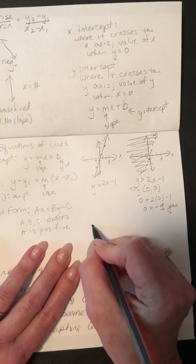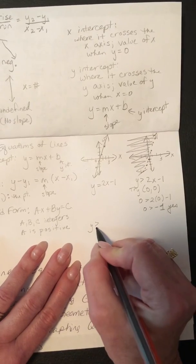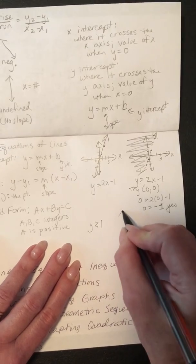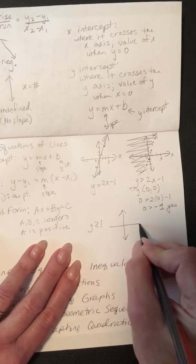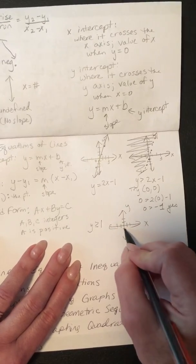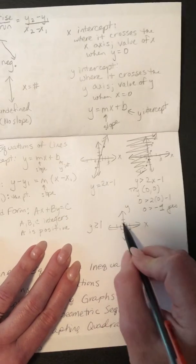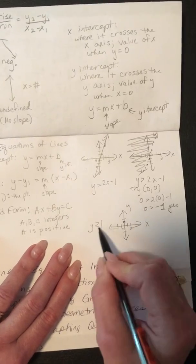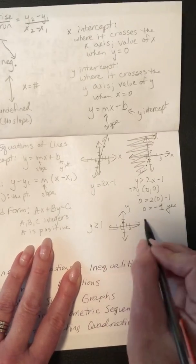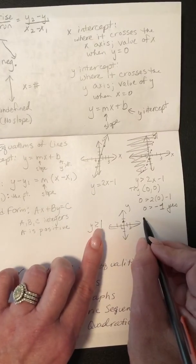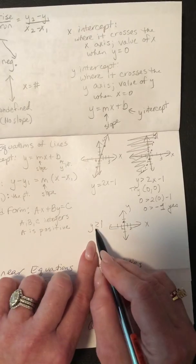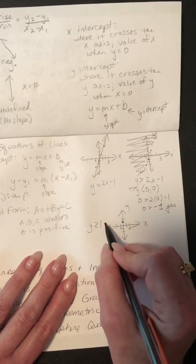I guess we'll just do one more. So, say it said y is greater than or equal to, let's just say, 1. So, you've got an x and you've got a y. And we don't need a lot of numbers. So, I would go to y equals 1. And it's y equals 1. So, the y value is 1 over and over and over. So, it's a horizontal line. And then you have to ask yourself, is it dashed or solid? And it is solid because there's a line underneath it. So, the line itself is included.